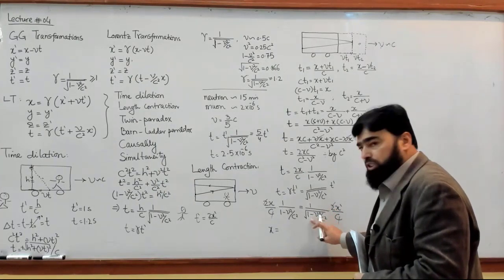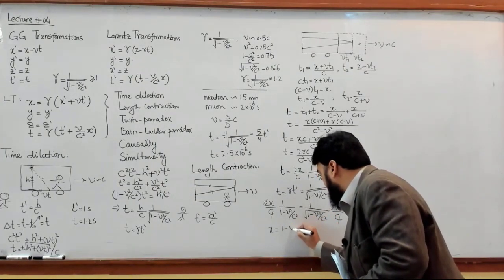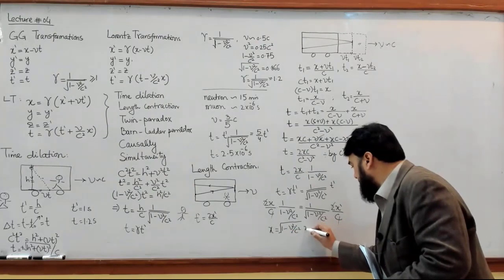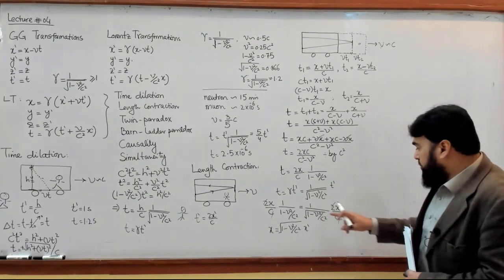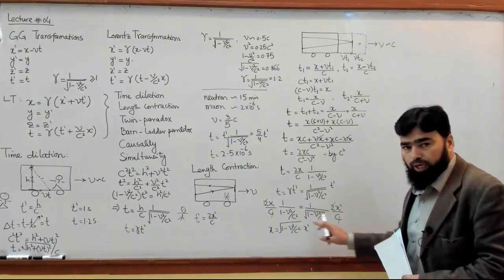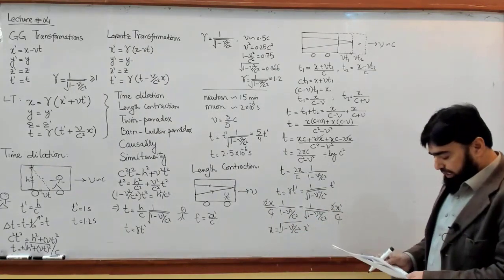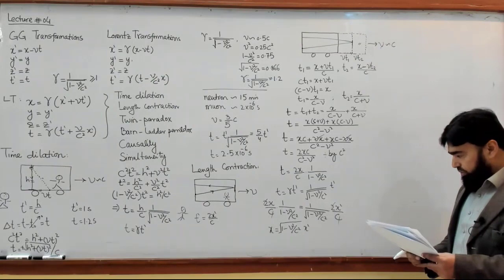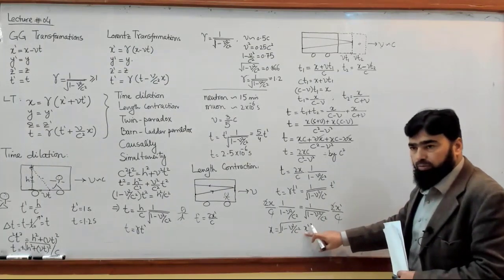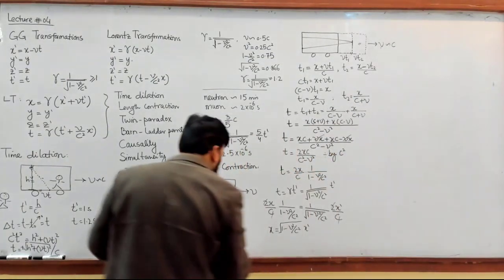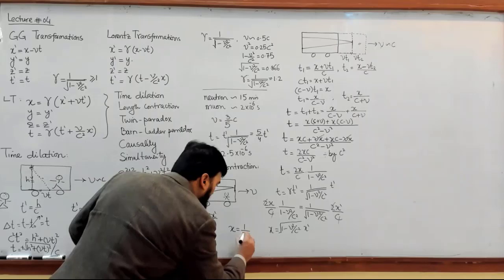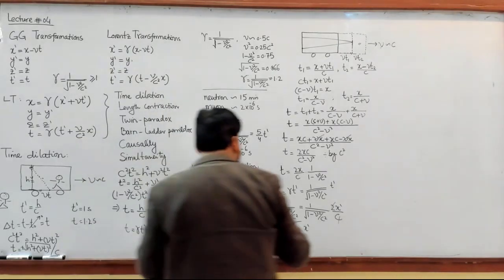It will simplify and you will have 1 minus v squared over c squared, and x prime. You can write this as a square root times square root — one square root will cancel, and you will get x equal to gamma times 1 over gamma times x prime. So what you get is x is equal to 1 over gamma times x prime.